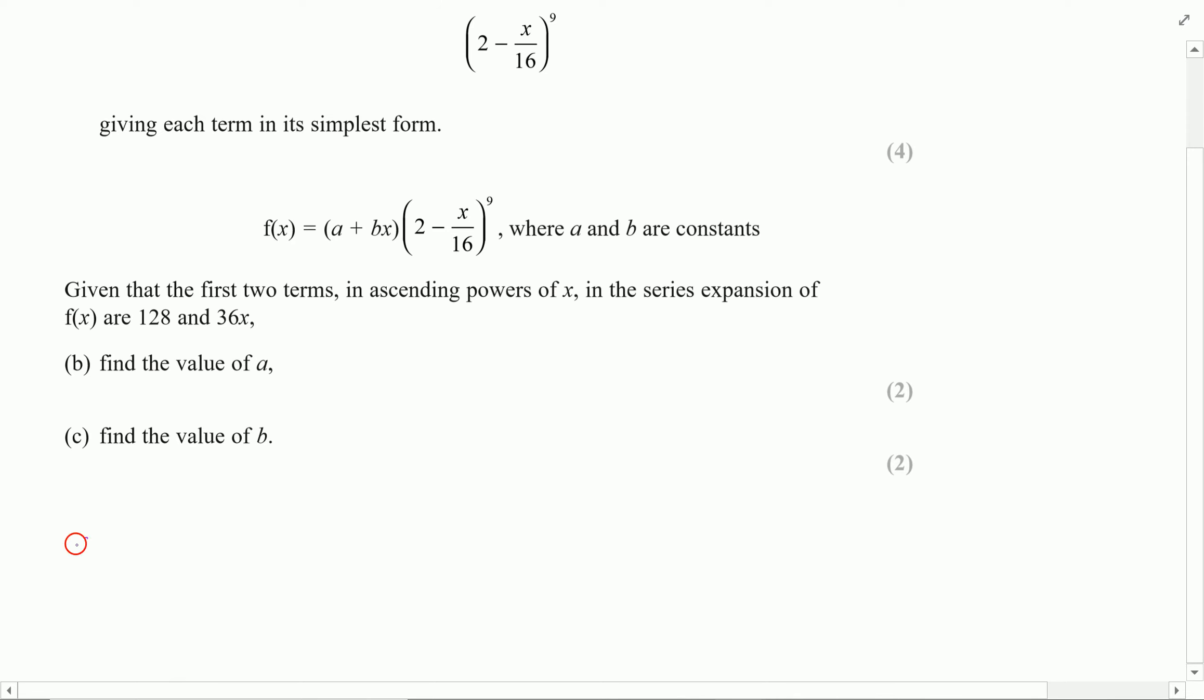For part A, I'm going to write 9 choose 0 of 2 to the power of 9 and then minus x over 16 to the power of 0. It may seem ridiculous that I write that down even though it's going to disappear, but I have a set way of writing these things out so that I don't forget to do anything. I write down the permutation on the front, the first term and then the second term. These two indices will add up to make the top value and this will always be my second indice.